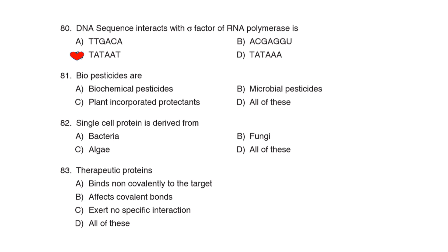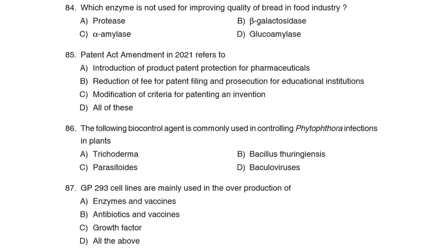77th Question: The DNA sequence that interacts with the sigma factor of RNA polymerase is Correct Answer: Option C: Promoter. 78th Question: Biopesticides Correct Answer: Option D. 79th Question: Single cell proteins are derived from Correct Answer: Option D: All of these. 80th Question: Therapeutic proteins Correct Answer: Option D: All of these.